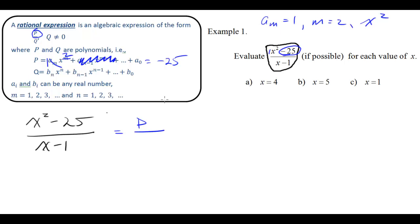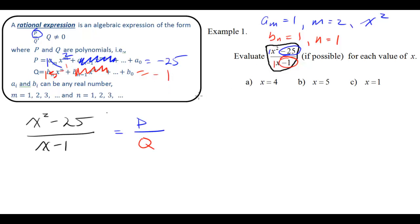Let's look at the denominator and show that it is also a polynomial, because by definition a rational expression is a polynomial over a polynomial. In this case, our leading coefficient B sub n equals 1, and n equals 1 — the highest power — because we have an implicit 1 there. We don't have anything in the middle with a variable, but we do have a constant: minus 1. So it was easy to fit these two polynomials into standard polynomial form to demonstrate that they are, in fact, polynomials.